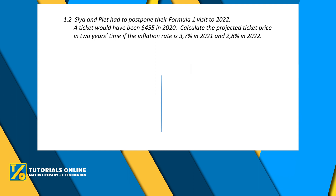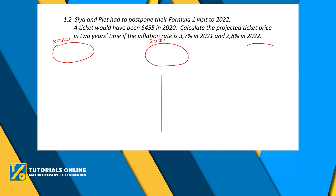I want to give you a little tip: if you have a question like this where it goes over a period of time, you need to do one calculation and then use that result for the next one. Draw a bubble for each year — one bubble for 2020, another for 2021, and another for 2022. Between each bubble, note the inflation rate for that period.